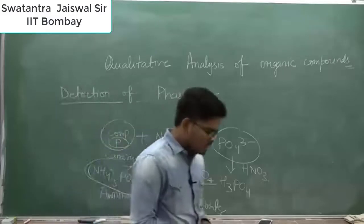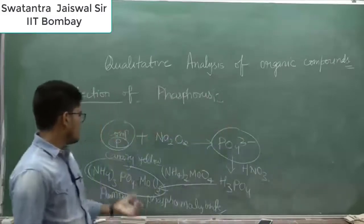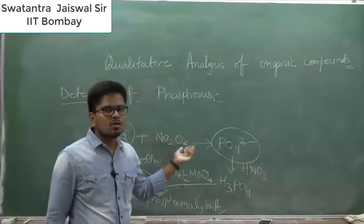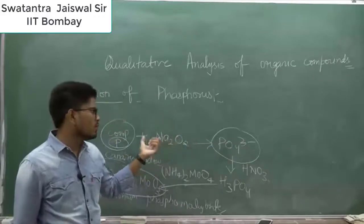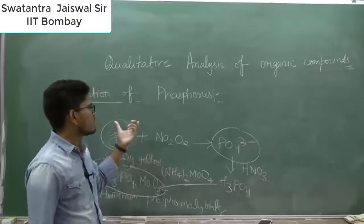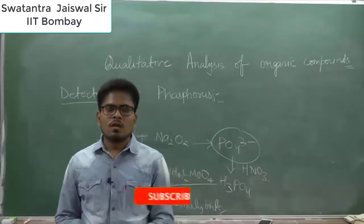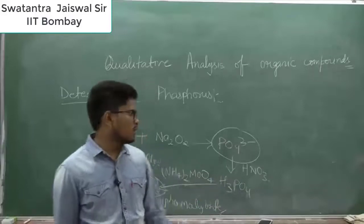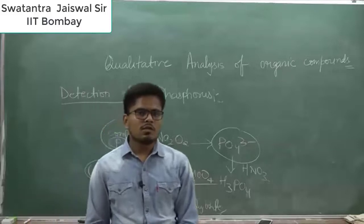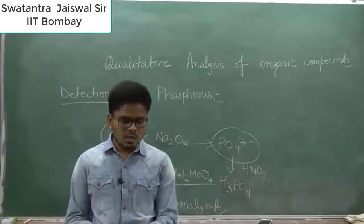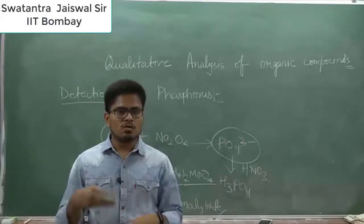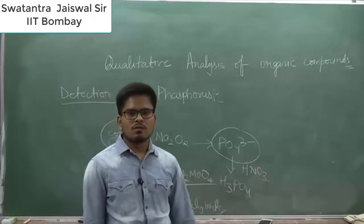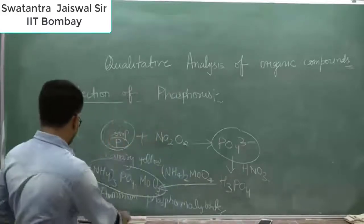The canary yellow color of ammonium phosphomolybdate confirms the presence of phosphorus. So far, we have detected carbon, hydrogen, nitrogen, sulfur, halogens (bromine, chlorine, iodine), and phosphorus. This completes the qualitative analysis of organic compounds. In the next lecture, we will discuss quantitative analysis — estimating elements like chlorine, hydrogen, carbon, phosphorus, and nitrogen. Thank you.